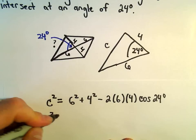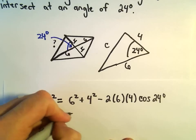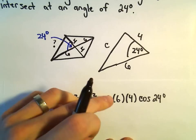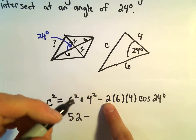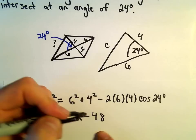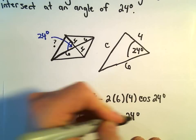And now it's just calculator stuff and some arithmetic. 6 squared is 36. This will be 16. 36 and 16 would be 52. 6 and 4 are 24. 24 times 2 would give us 48. So we'll have minus 48 times cosine of 24 degrees.